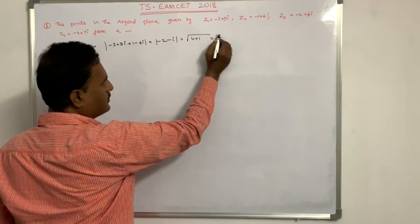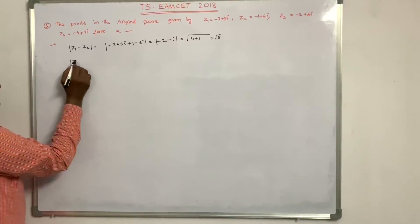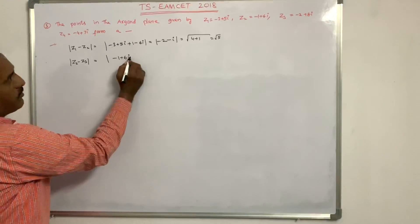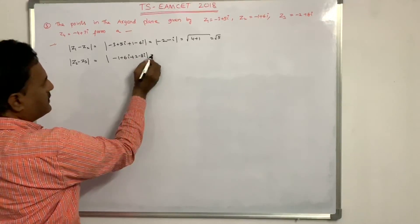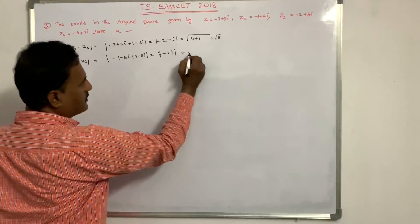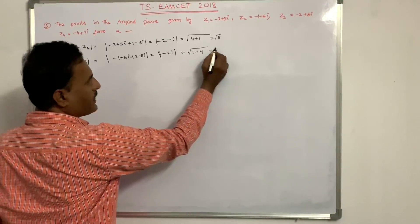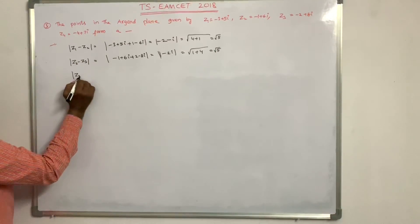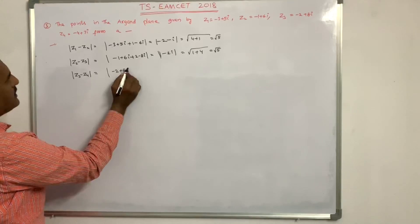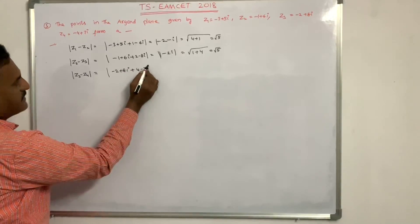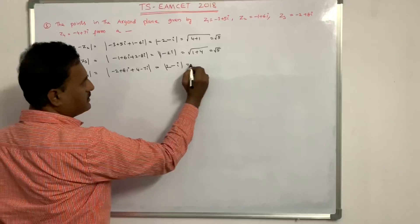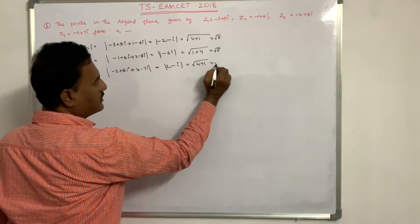Next, modulus of z2 minus z3: (minus 1 plus 6i) minus (minus 2 plus 8i) equals 1 minus 2i, and modulus equals under root of 1 plus 4, which is root 5. Modulus of z3 minus z4: (minus 2 plus 8i) minus (minus 4 plus 7i) equals 2 plus i, and modulus equals under root of 4 plus 1, which is root 5.